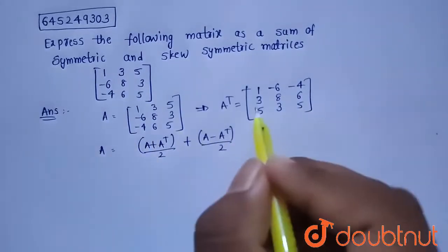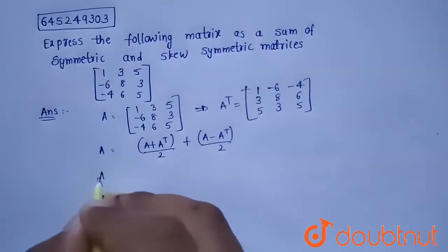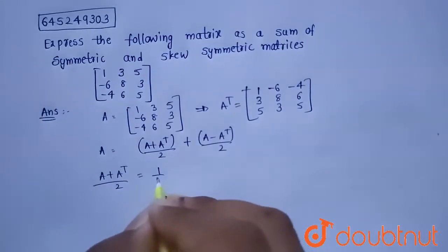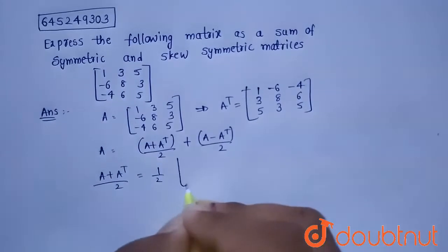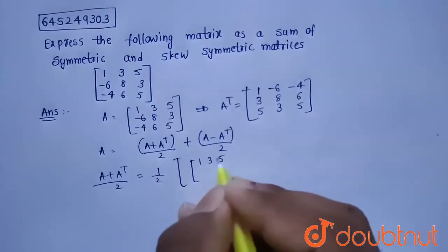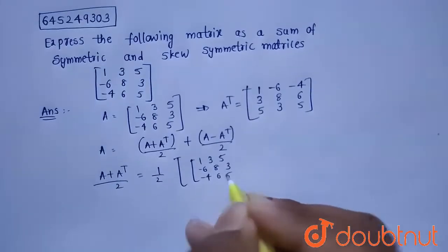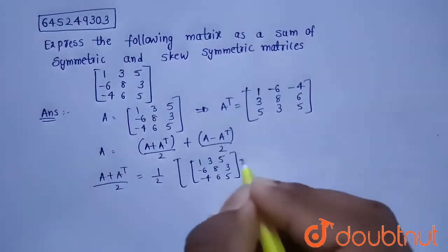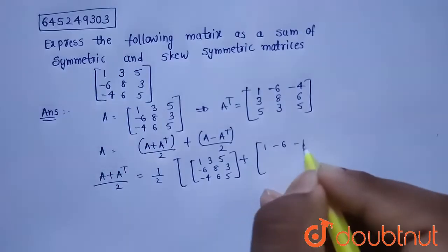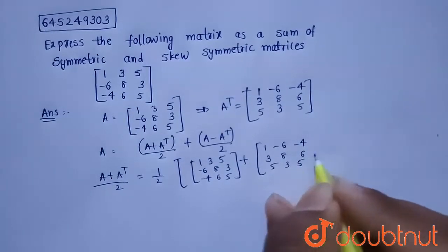Now we have A and A transpose. We find the symmetric matrix, which is (A + A^T)/2. That will equal (1/2) of [1, 3, 5; -6, 8, 3; -4, 6, 5] plus [1, -6, -4; 3, 8, 6; 5, 3, 5].